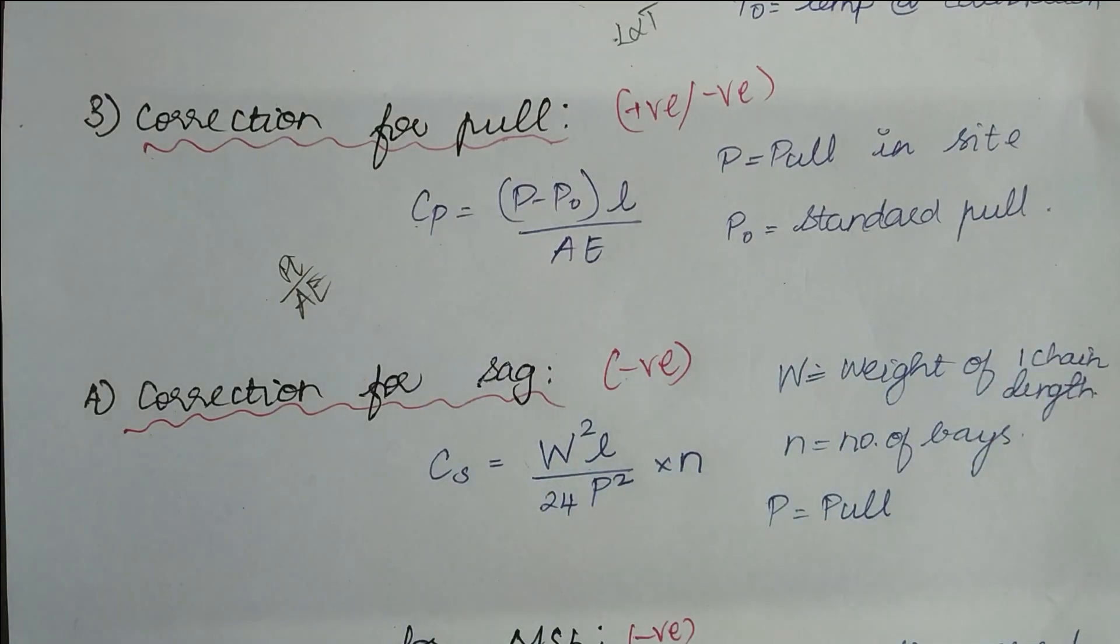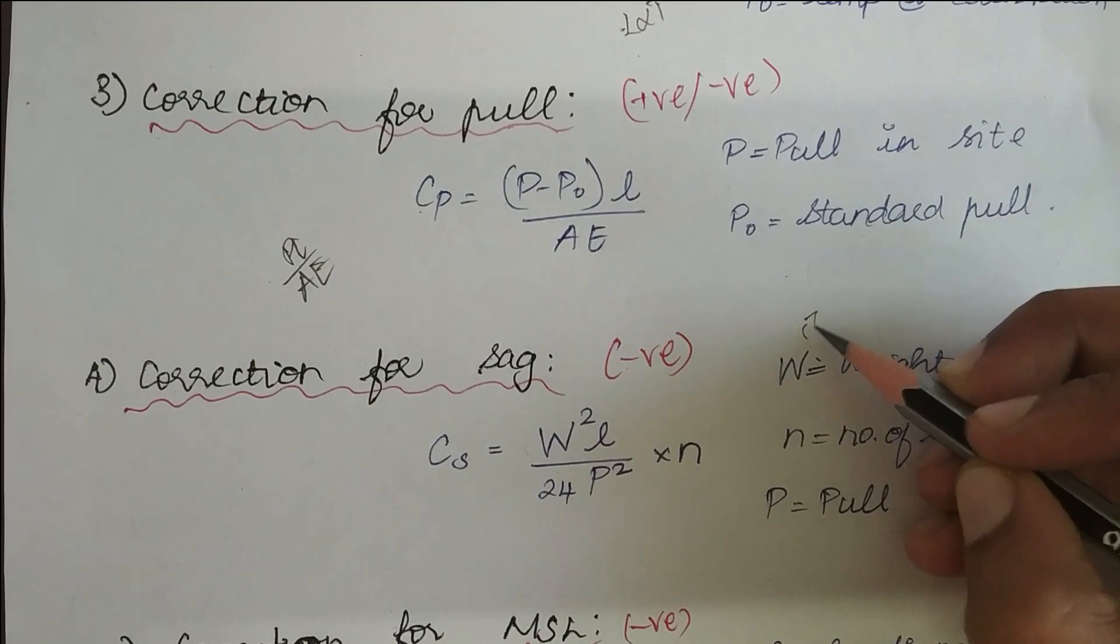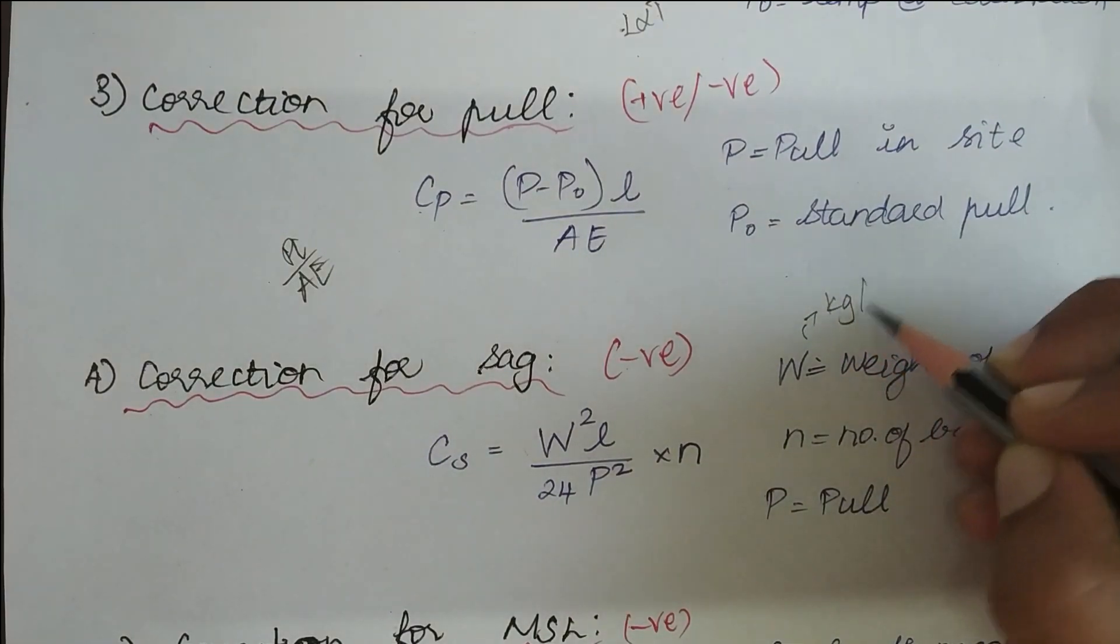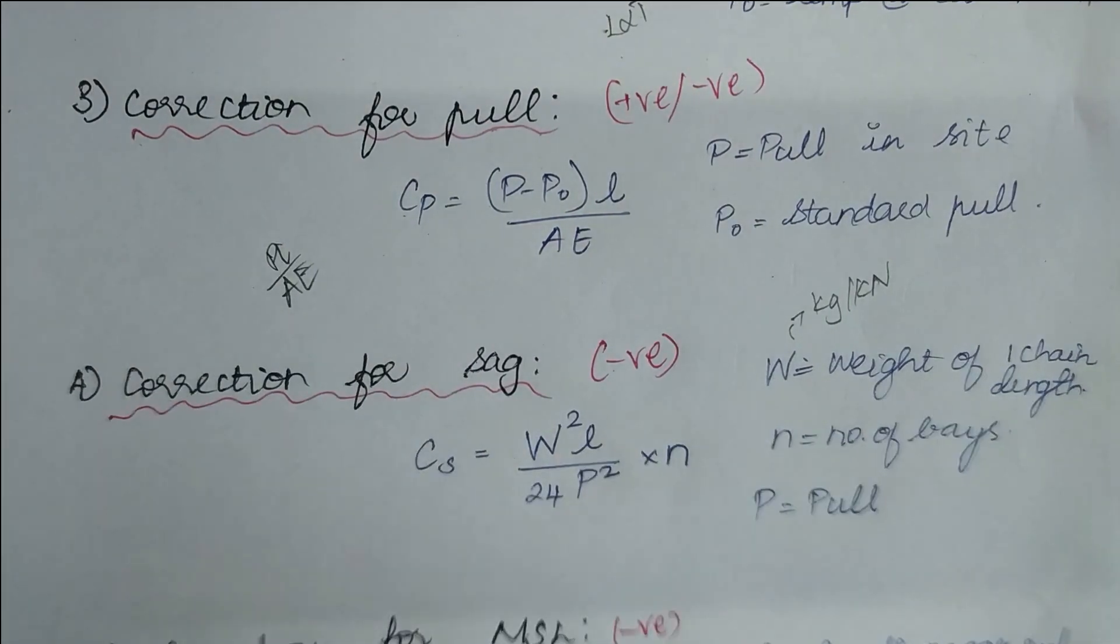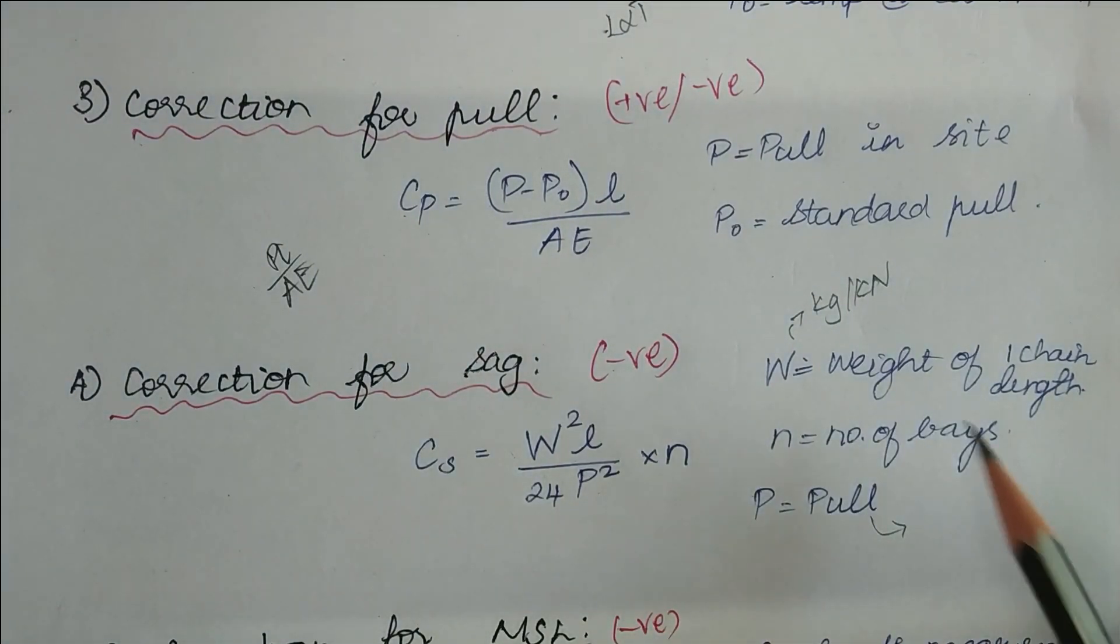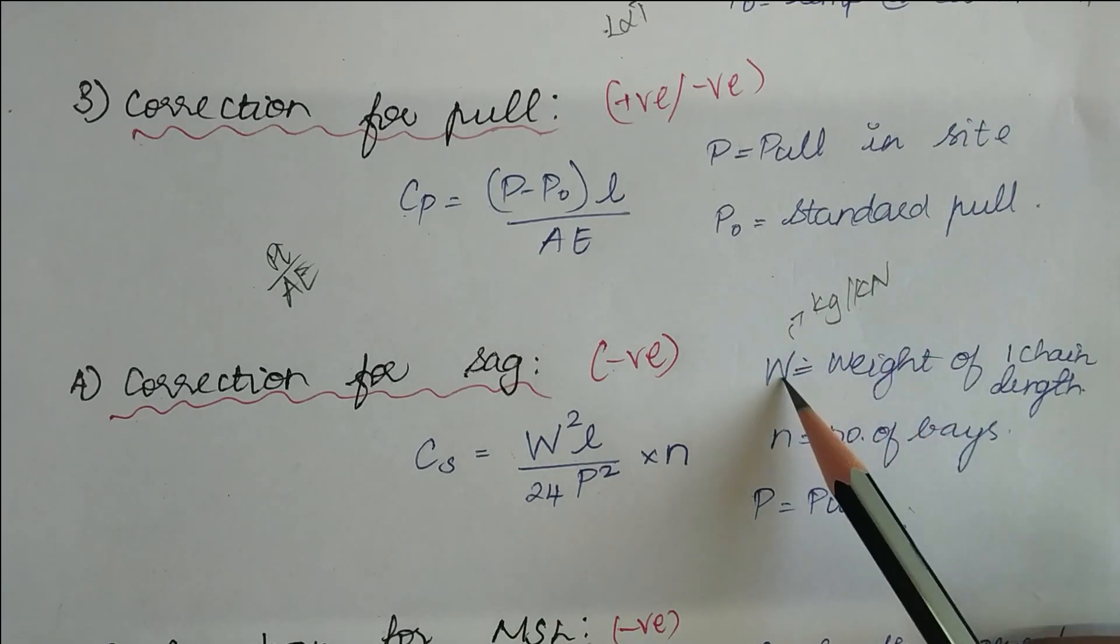When W is weight of one chain length. The unit, you have to remember this very, this is very important to remember. The unit of W is going to be kg or kilonewton or something in newtons. And where P is pull and P is also going to be in the same unit as that of W, kg or kilonewton.